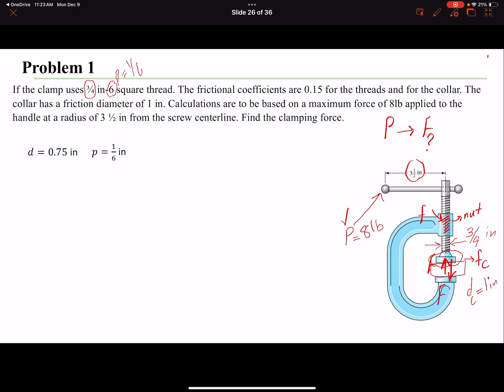The pitch would be the reciprocal of the threads, the number of threads per inch, so 1/6. The lead would be the same as pitch here because it's a single start - the problem doesn't mention anything else. The mean diameter or the pitch diameter for the square threads is d minus half of the pitch.